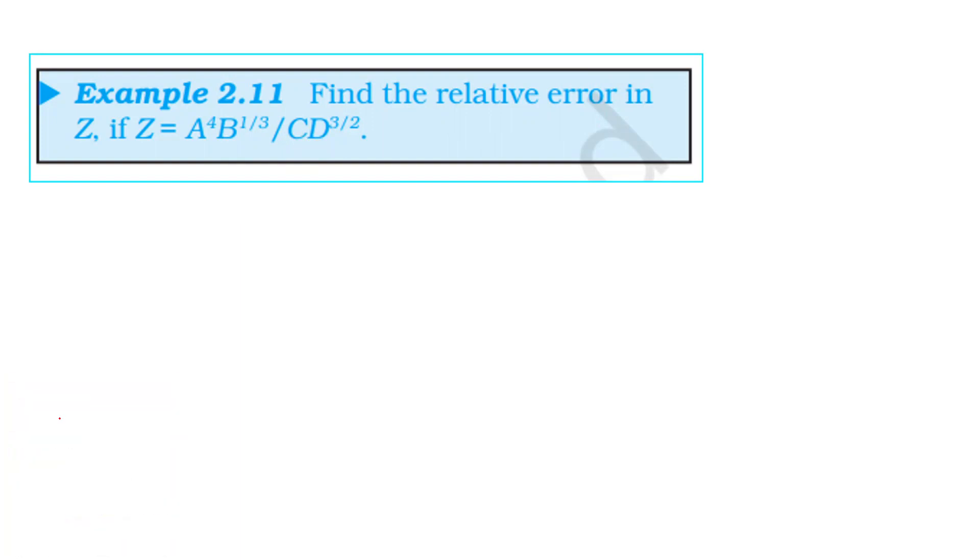Relative error is not the percentage error. If the relative error in z is in addition or multiplication, we will find the sum of individual relative error and the power times of relative error.